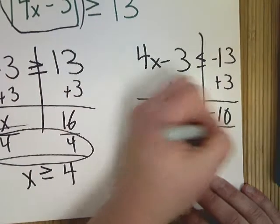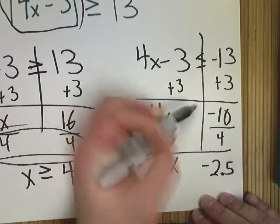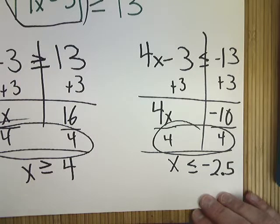Bring everything down. Really, handwriting and algebra is more important than anything else. I divide it by a positive, so I don't need to flip it over. So x is less than negative 2.5.